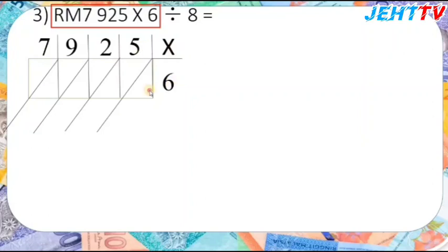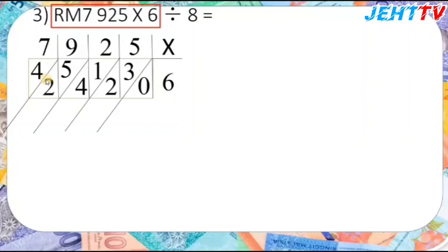6 times 5 equals 30, 6 times 2 equals 12, 6 times 9 equals 54, 6 times 7 equals 42.